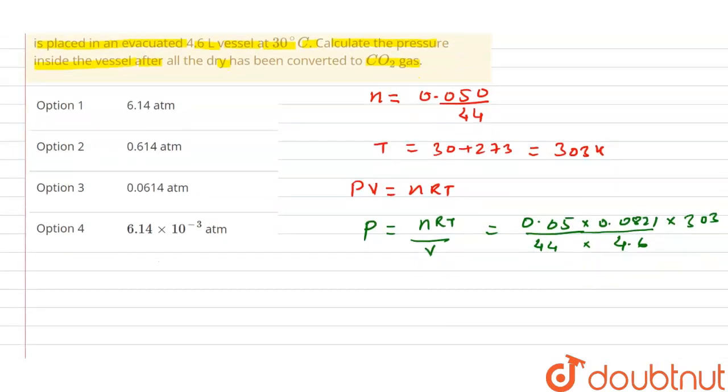Now calculate all these values. After calculation, this value is coming out to be 6.14 into 10 to the power minus 3 atm. So that means fourth option will be the right one. So I hope you understand this concept, thank you.